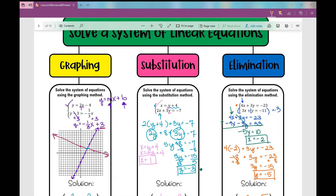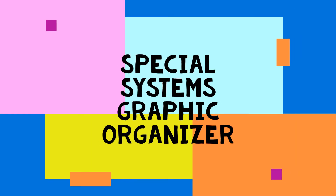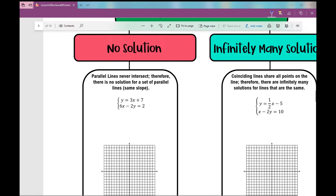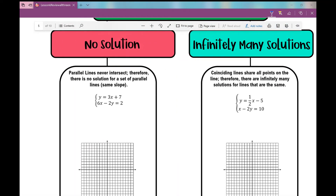Now let's go to the special systems of equations graphic organizer. Those special situations — no solution or infinitely many solutions — are covered here with examples. Parallel lines never intersect, therefore there is no solution for a set of parallel lines. Parallel lines have the same slope. We're going to solve this by graphing, though you could also use substitution or elimination.